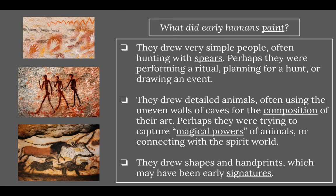What did early humans paint? They often drew very simple people — often hunting with spears, as you can see in the middle picture. They're pretty much stick figures, without much detail. Perhaps they were performing a ritual, planning for a hunt, or drawing a past event. They also drew detailed animals, often using the uneven walls of caves for composition — like using a ledge or natural bends in the rock as part of the animal. Perhaps they were trying to capture the magical powers of animals or connect with the spirit world.